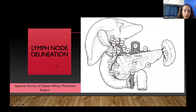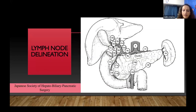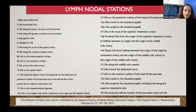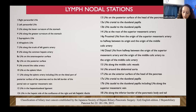For lymph node delineation, there is a new system recently described in updated atlases — the Japanese Society of Hepatobiliary Pancreatic Nodal Staging — which divides nodal stations into as many as 18 stations. Even level 16 has 12 sub-kinds. While these classifications have primary surgical relevance, you should know where these stations lie because the newer atlases describe nodal stations in context to this classification system.